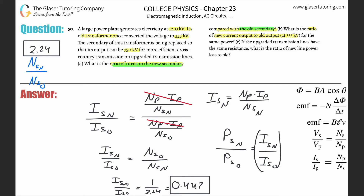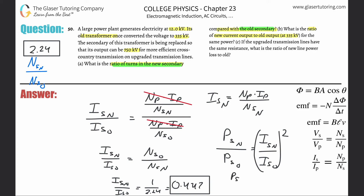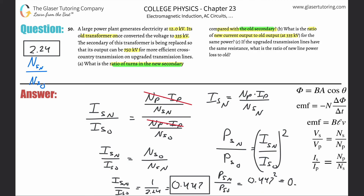We can square the current ratio we just calculated. So we take 0.447 and square it: 0.447 squared equals approximately 0.200. Rounding, you get about 0.200. That's the ratio of the new power line loss to the old — the upgraded line loses only about 20% of what the old line lost.